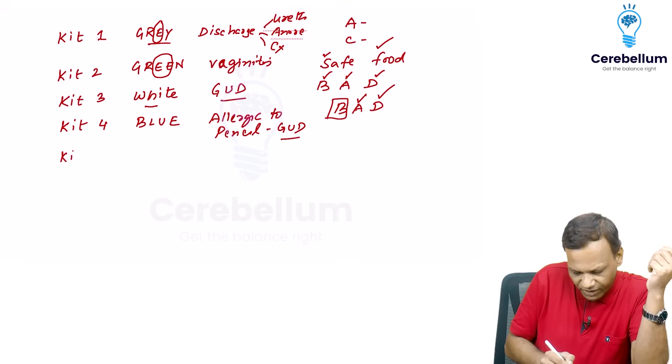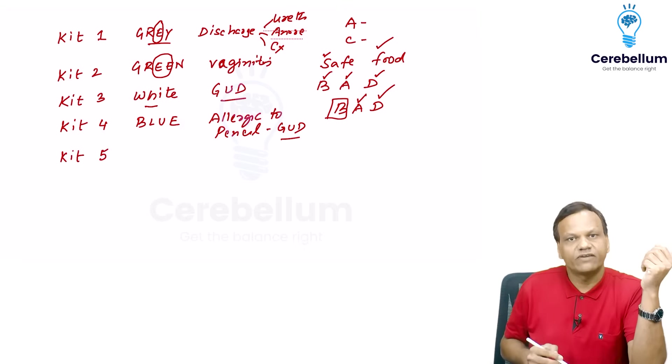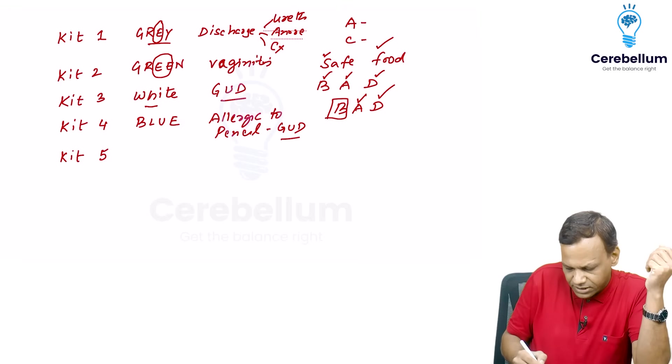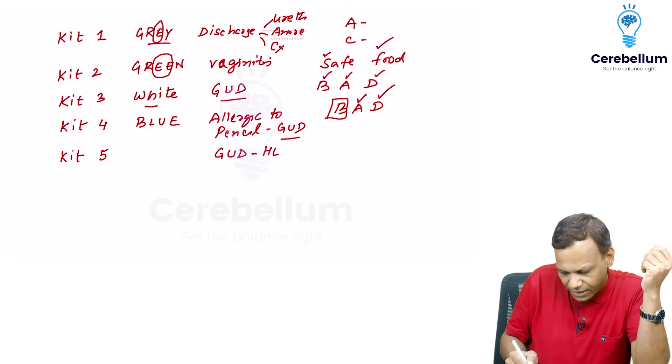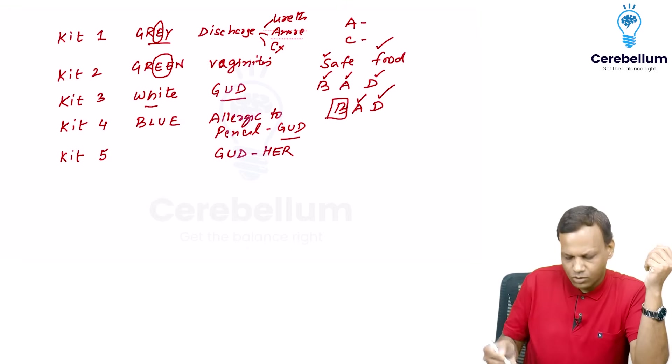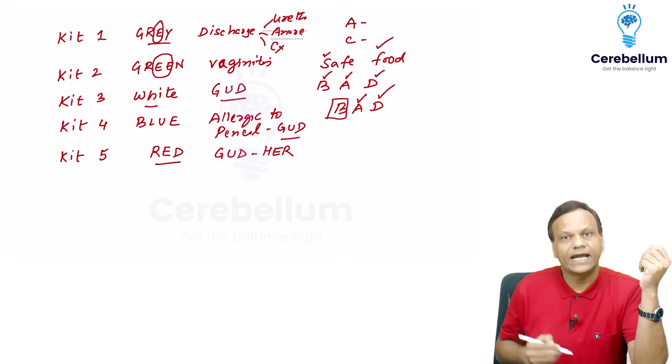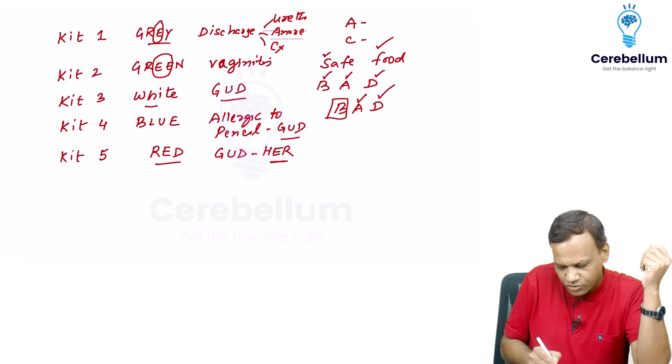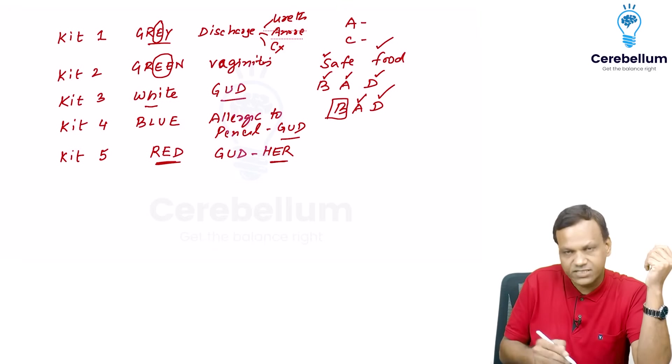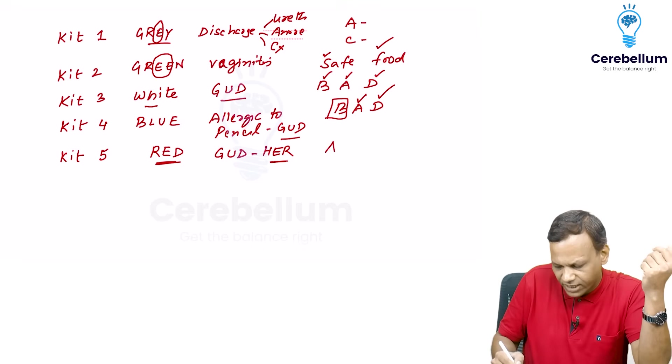Then we have kit 5. Kit 5 is genital ulcer disease which is herpetic. So this is red. Remember her face is always red. So her face is always red. So what we will do. We will keep her in AC. That means acyclovir.